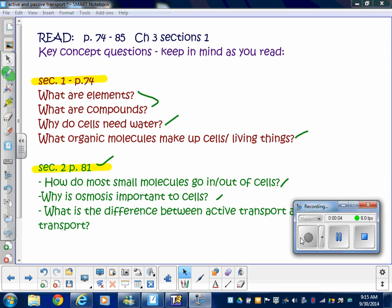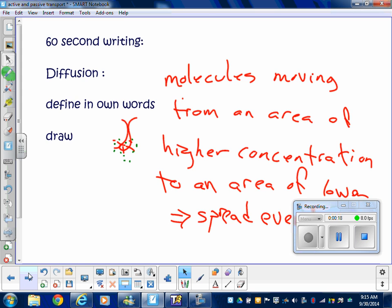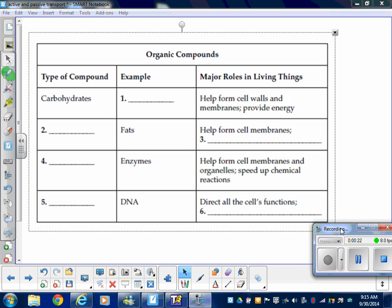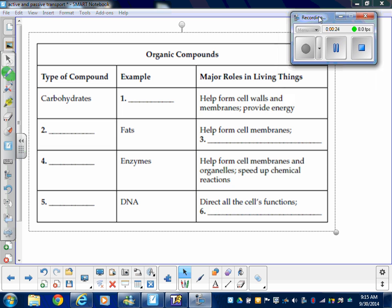This week we're talking about how things get in and out of the cell and what cells are made of. These are the questions you looked at yesterday as you read, and here in case you want it for review. This is chapter three sections one and two, but what you've been doing today is looking at these worksheets.